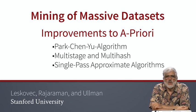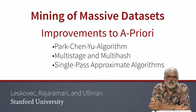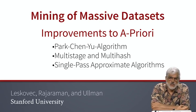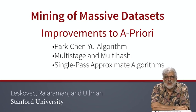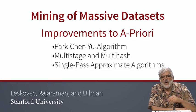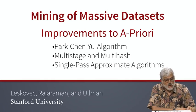Then we'll go in another direction. We'll accept that the result might not be accurate — that is, we'll allow the algorithm to fail to identify some of the frequent item sets. But we want to finish quickly, preferably in only one pass, or perhaps one pass and a little more. Several approaches of this type will also be discussed.